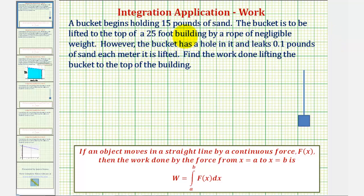A bucket begins holding 15 pounds of sand. The bucket is to be lifted to the top of a 25-foot building by a rope of negligible weight. However, the bucket has a hole in it and leaks 0.1 pounds of sand each meter it is lifted. Find the work done lifting the bucket to the top of the building.